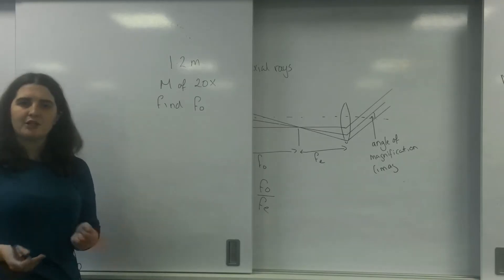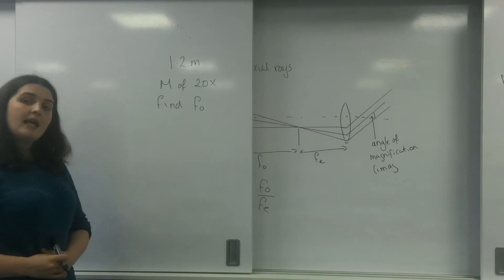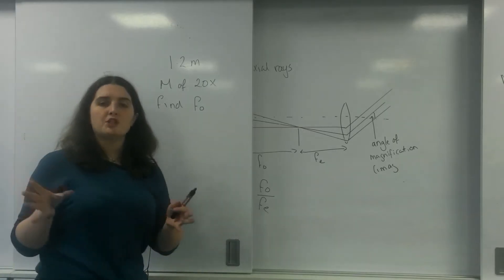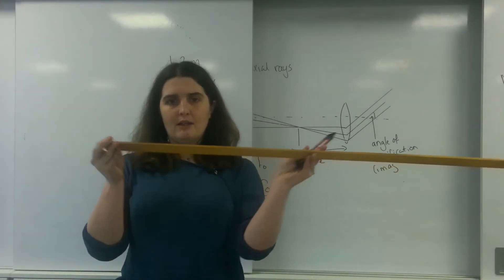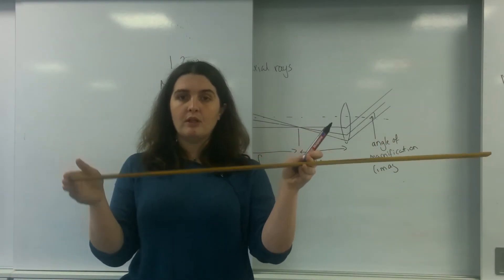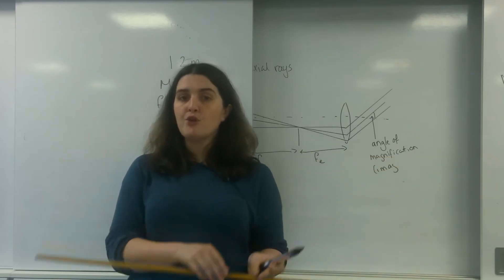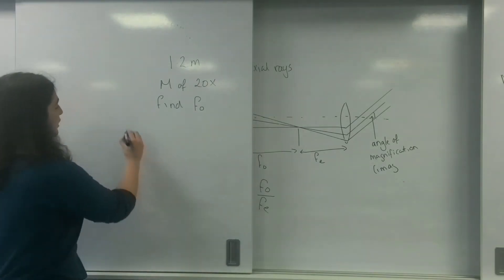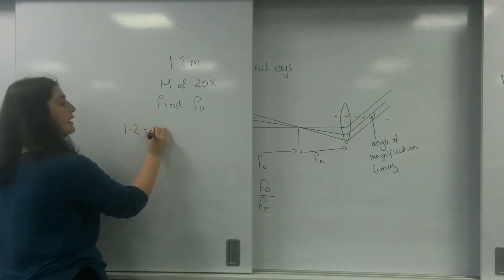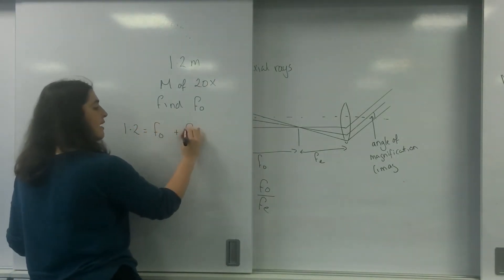Now, I haven't been given much information, but in fact, I've actually been given enough. And this is the important thing here. Something to remember, in the normal adjustment, it is the special consideration that the length of your telescope total is the sum of the two focal lengths of the actual lenses. So I know that 1.2 is F0 plus FE.